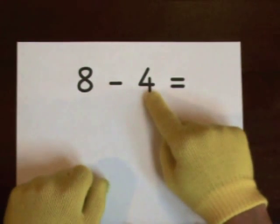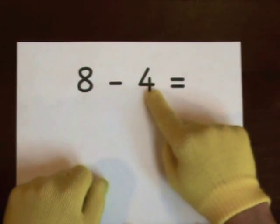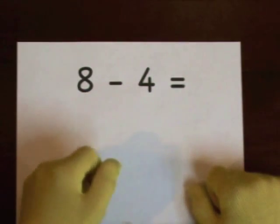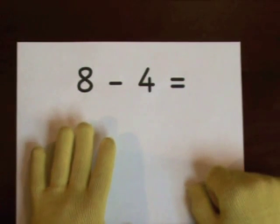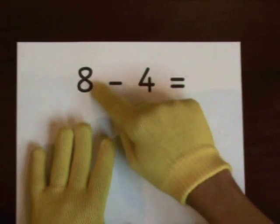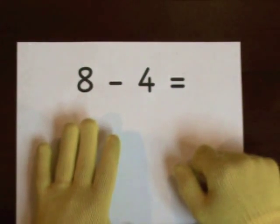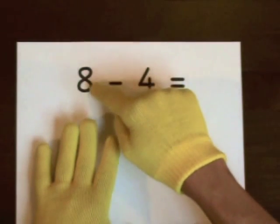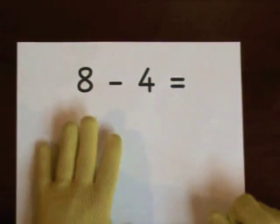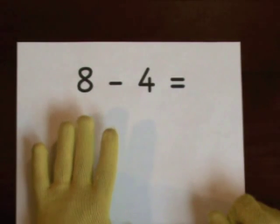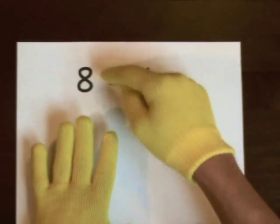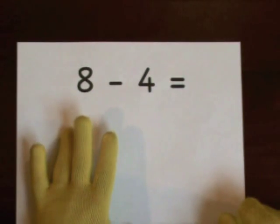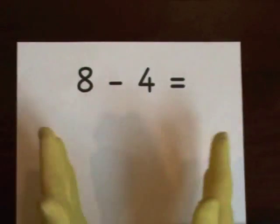8 minus 4. Start at 8, do 4 on our fingers. 1, 2, 3, 4. That's how many we'll take away. I'll start at 10 and count down to 8. You go the rest of the way. 10, 9, 8. Again, 10, 9, 8. And that's it. Great job!